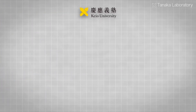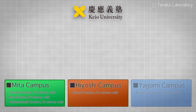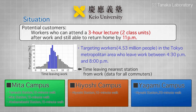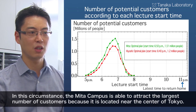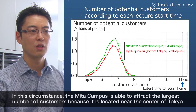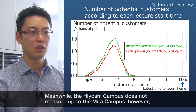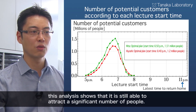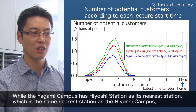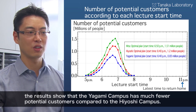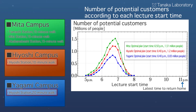Using this mathematical model, Dr. Tanaka calculated the number of potential customers for a three-hour lecture targeting working adults according to start time, held at three candidate locations: Keio University's Mita campus, Hiyoshi campus, and Yagami campus. The fact that the difference in walking time from Hiyoshi Station has a big influence on the number of potential customers becomes clear for the first time when the mathematical model is applied to actual data.